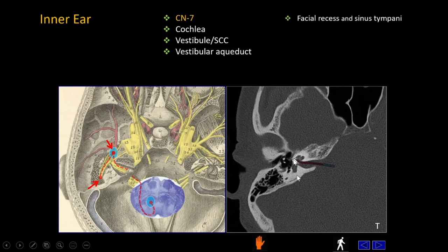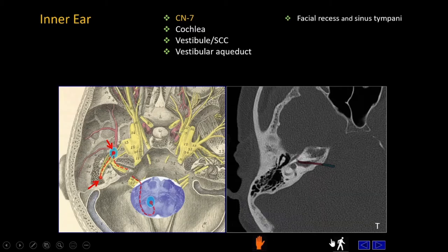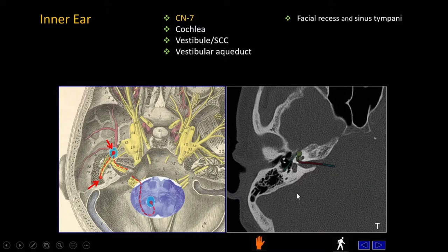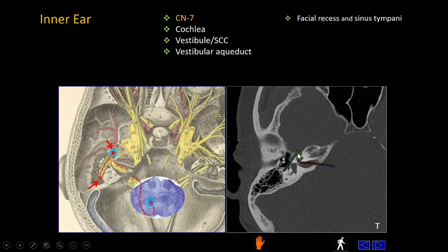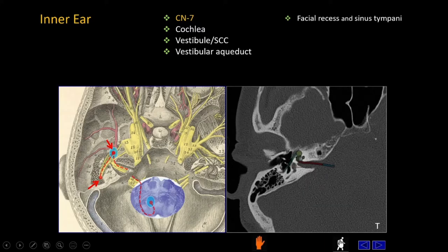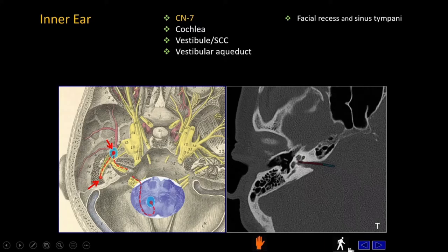The internal auditory canal takes an anterior bend — that's the geniculate ganglion. It takes a sharp anterior genu, extending into the tympanic segment, then becomes the posterior genu and takes a sharp dive from superior to inferior into the mastoid segment.